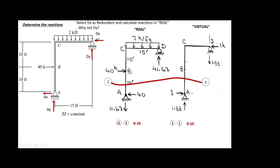Section one-one goes from zero to ten. I measure x from this direction, and my intention is calculating the big M over there. Doing summation of moments equals zero, you get M minus 40 times x equals zero, giving the moment function for that section. For the small m in the virtual case, it's basically the same thing: m minus one times x equals zero, so m equals negative x.